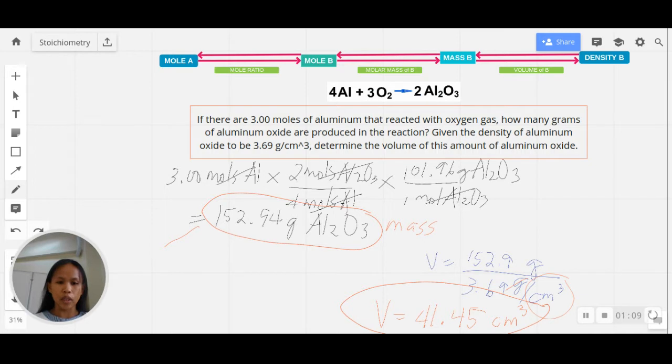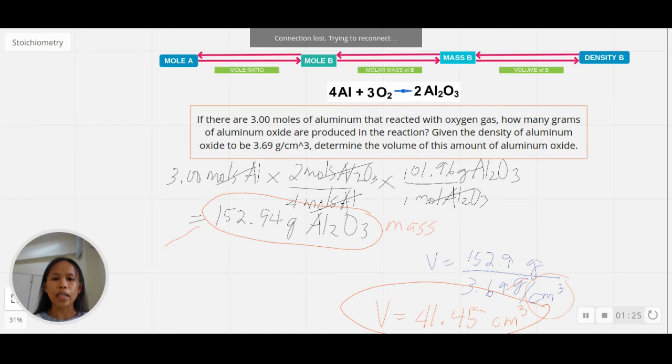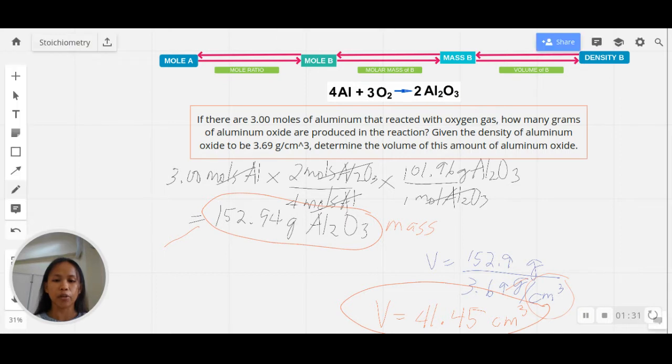To recall the process: to get the mass first of aluminum oxide, because this is a mole-to-mass problem, you begin by writing the given. Then the first conversion factor will be the mole ratio of aluminum and aluminum oxide, followed by the molar mass of your aluminum oxide. You cancel out the units.